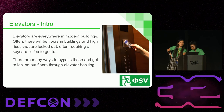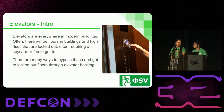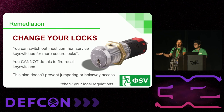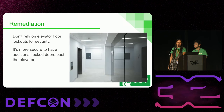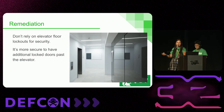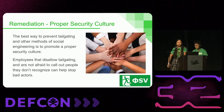Elevators — we have them everywhere in modern buildings and there are a lot of bypasses to get around them. A lot of elevator locks can be changed out and don't have to be the default. This is not true for fire recall switches — do not touch your fire recall key switches. Generally, the best way to prevent people from hacking your elevators to get into a space is don't rely on elevator floor lockouts for security. It's far better to have a hallway with additional locked doors past the elevator to prevent unauthorized access.